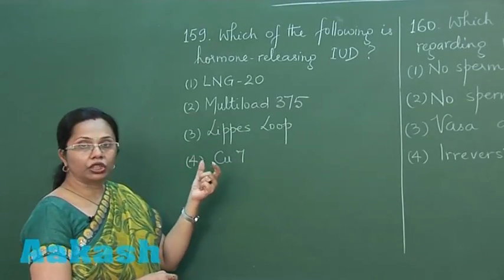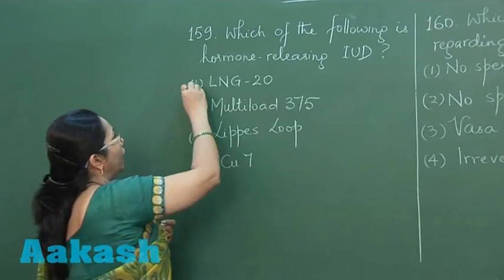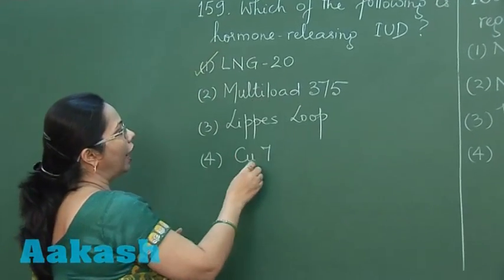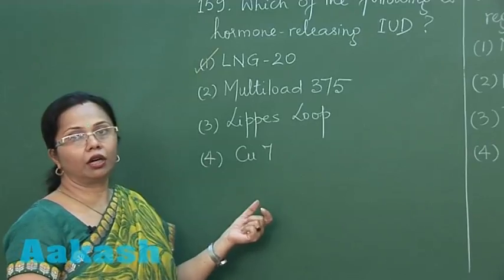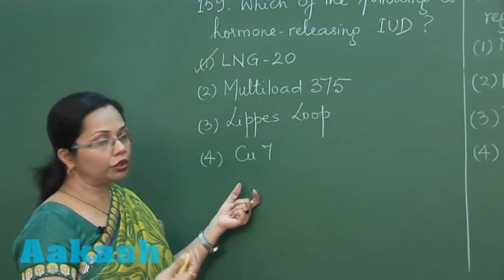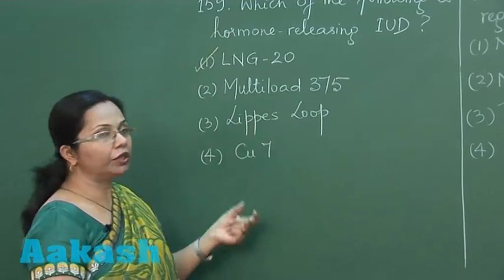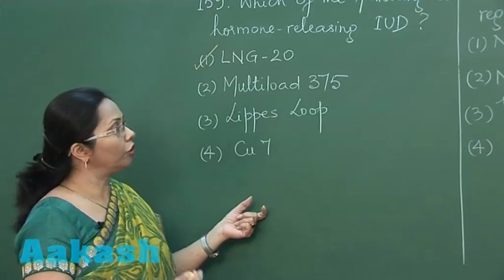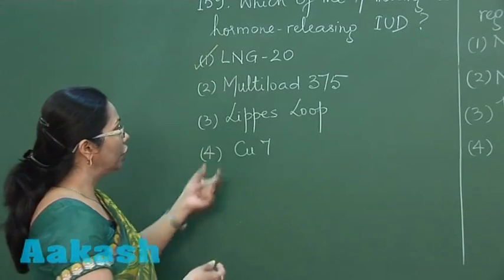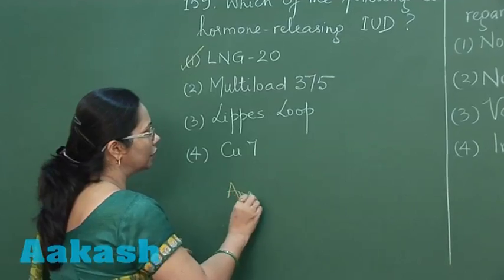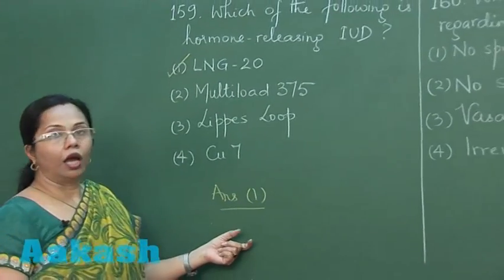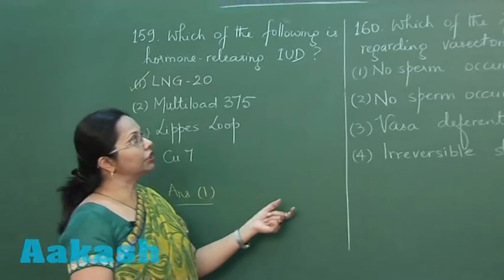While Multiload and Copper-T, these are copper ions releasing IUD, while Lippes Loop is non-medicated or biologically inert IUD. So our answer is the first one. Then the next question, 160.